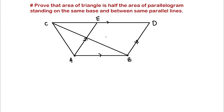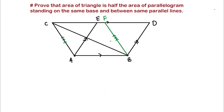This theorem is easier than our first theorem, but the extra thing we need to do is make a construction. Our construction is: we are going to draw a line from B which is parallel to AC. So we draw line BF parallel to AC. That's our construction. In our first theorem we did no constructions; in this theorem we need this construction, and then it's pretty easy to prove the theorem.